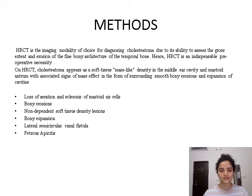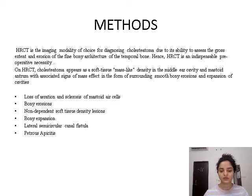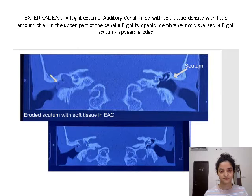Few of the radiological signs that you can appreciate in a case of cholesteatoma are: loss of aeration and sclerosis of mastoid air cells, bony erosions, non-dependent soft tissue density lesions, bony expansion, lateral semicircular canal fistula, and petrous epicitis. Now, I will be explaining the radiological findings with some of the clinical radiological pictures.